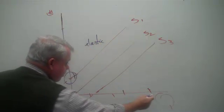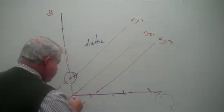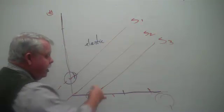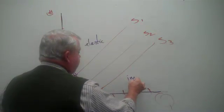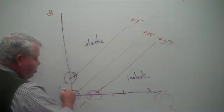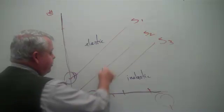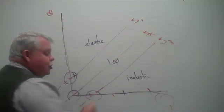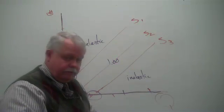If it intercepts the quantity axis down here, it's going to calculate out to be an inelastic supply curve. And if it happens to go through the origin, straight line, it's going to calculate out to be a unitary elastic supply curve. Alright?